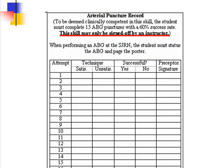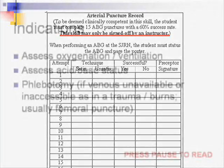Prior to the challenging of the CBO, the student must show the instructor the completed arterial puncture record. There must be at least 15 puncture attempts with a 60% success rate in those attempts prior to the challenging of this competency-based objective.